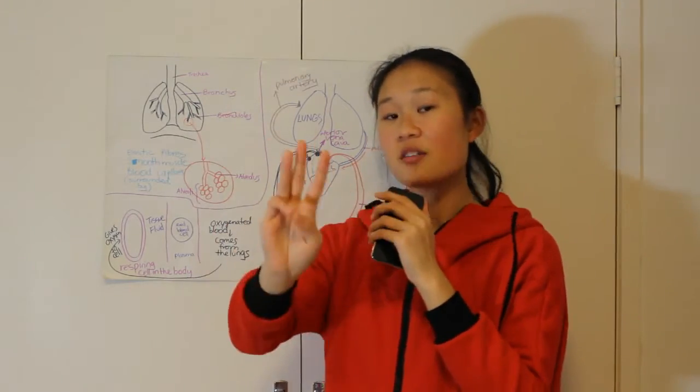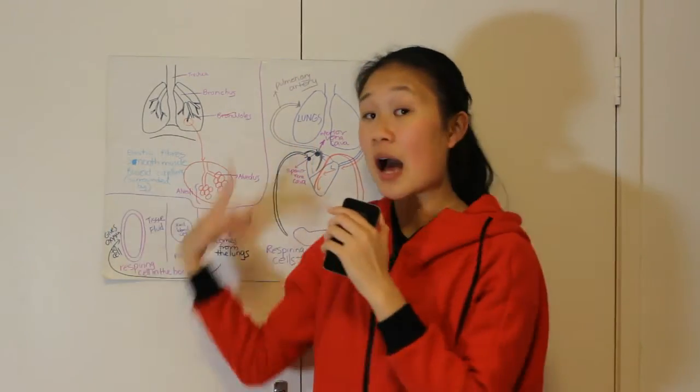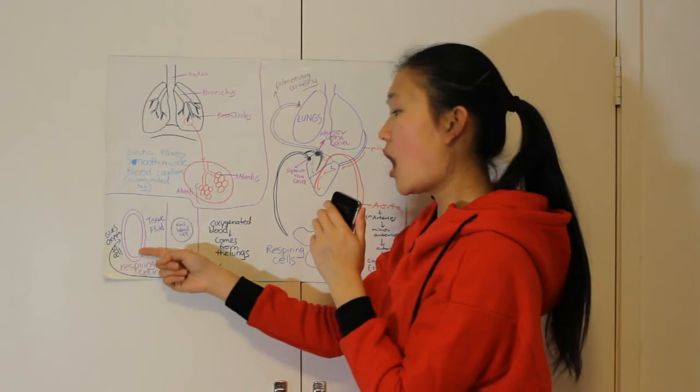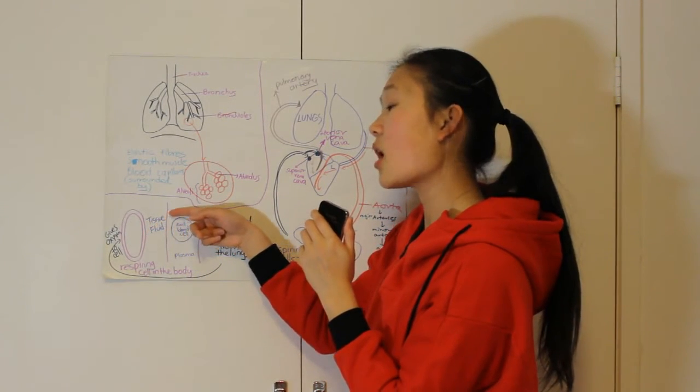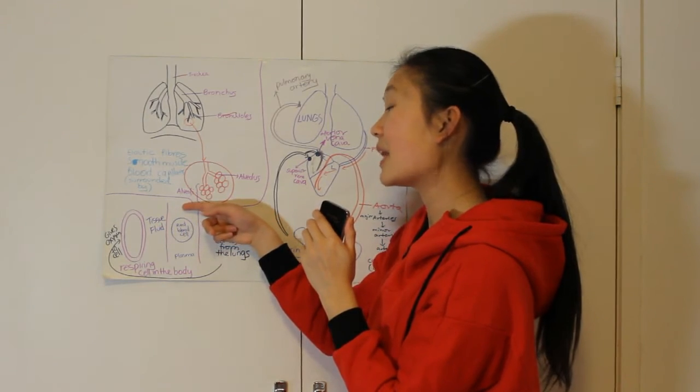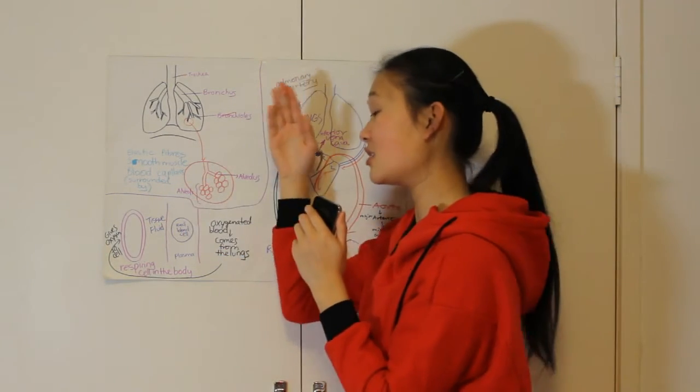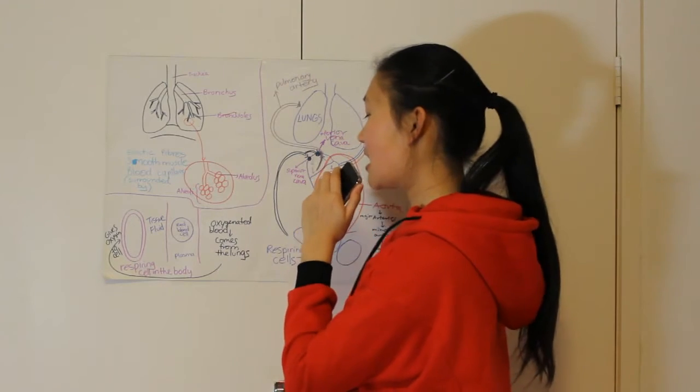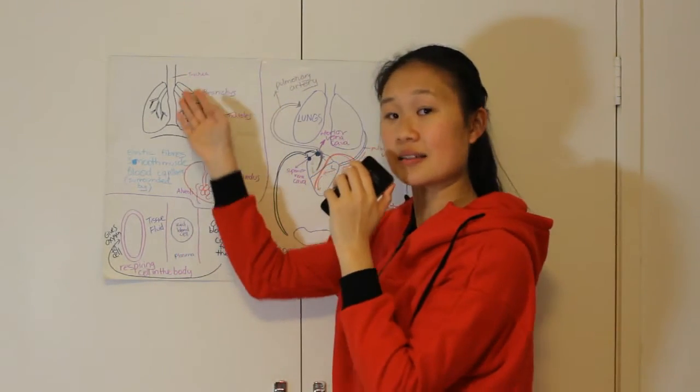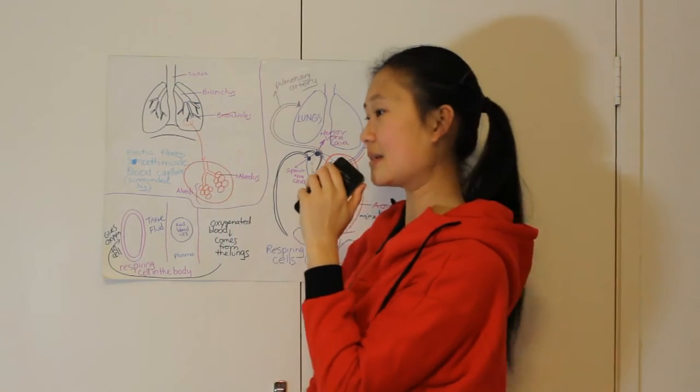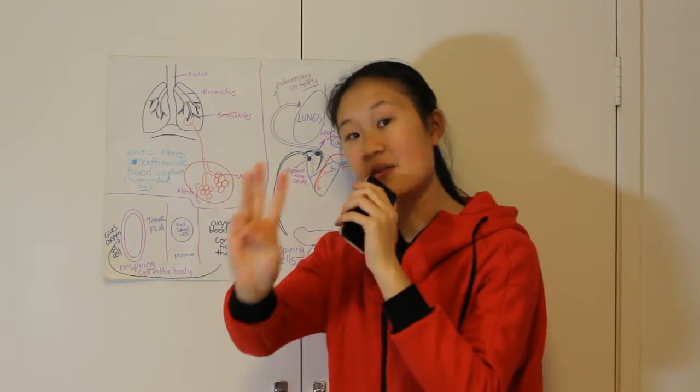The third way is how carbon dioxide will diffuse straight through the squamous epithelium and then into the plasma, and then it is dissolved in the plasma and then the blood is taken straight to the lungs so it can be oxygenated. So that's three ways.